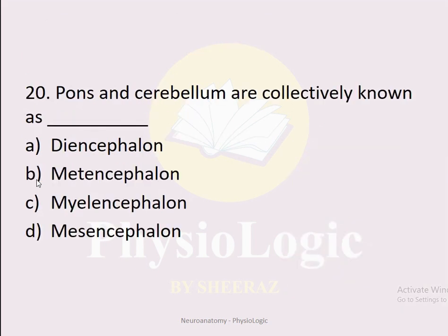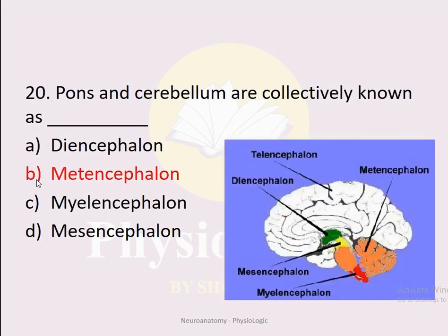MCQ number twenty: Pons and cerebellum are collectively known as — Option A: diencephalon. Option B: metencephalon. Option C: myelencephalon. Option D: mesencephalon. The correct option is B: metencephalon. Pons and cerebellum together form the metencephalon. Medulla oblongata is known as myelencephalon. Mesencephalon is the midbrain, and telencephalon and diencephalon are part of prosencephalon.